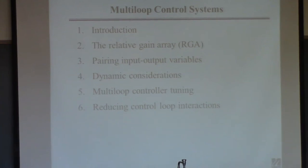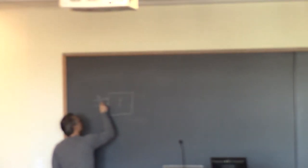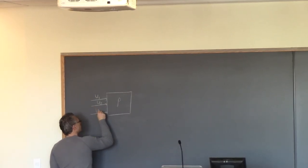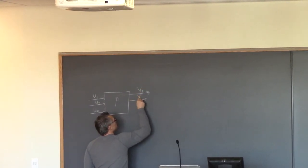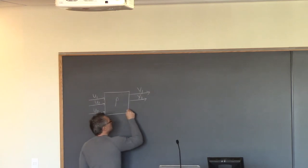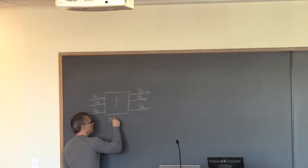This is the continuation of the lecture from last week — I guess it was a week ago on Tuesday. We're talking about multi-variable systems. There's some process P with more than one input and more than one output. The picture shows there are n things we can manipulate and n things we want to control, so we call this an n-by-n system.